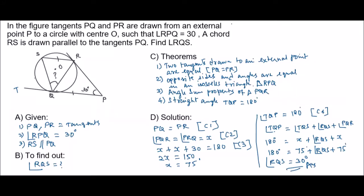In the figure, tangents PQ and PR are drawn from an external point P to a circle with center O, such that angle RPQ is equal to 30 degrees. A chord RS is drawn parallel to the tangent PQ. Find the angle RQS.